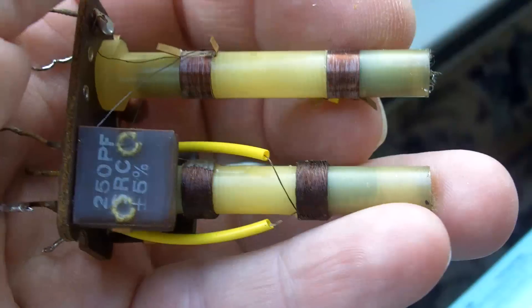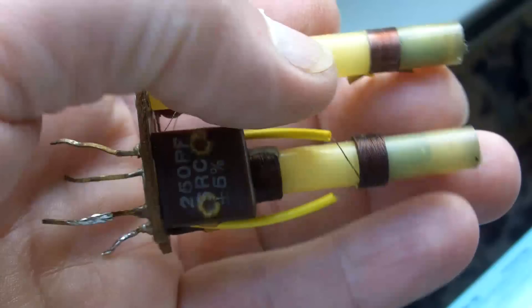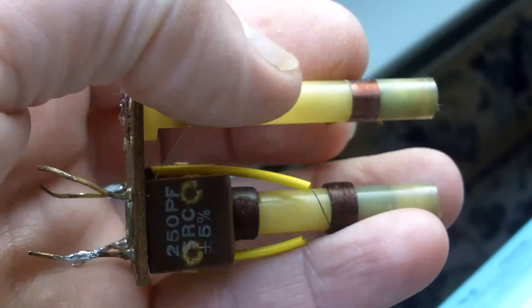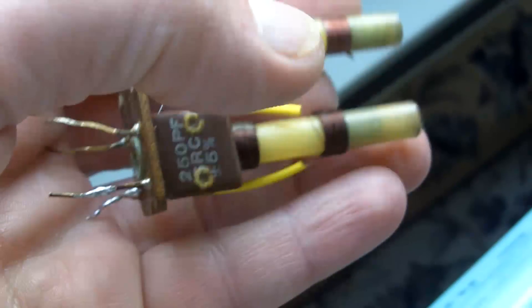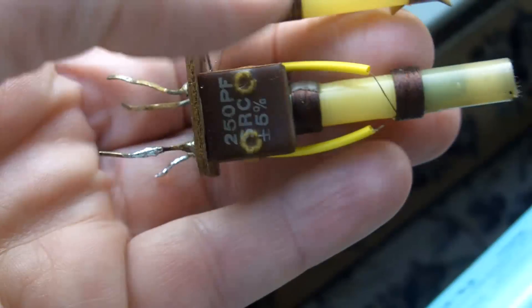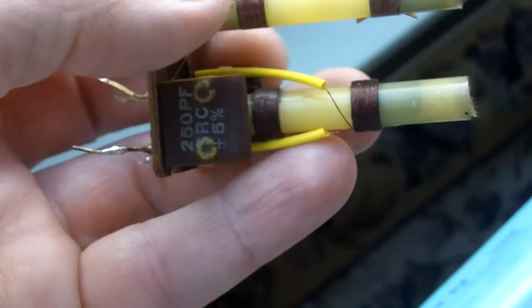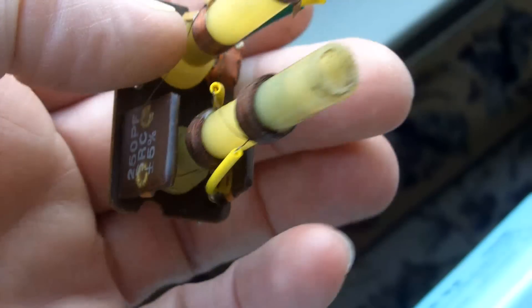Another point that may not have escaped your notice is the huge gap between the primaries on the left and the secondaries on the right. Normally if you wanted to make an efficient transformer the primary and secondary windings would be very closely associated with one another for good magnetic coupling and high efficiency.